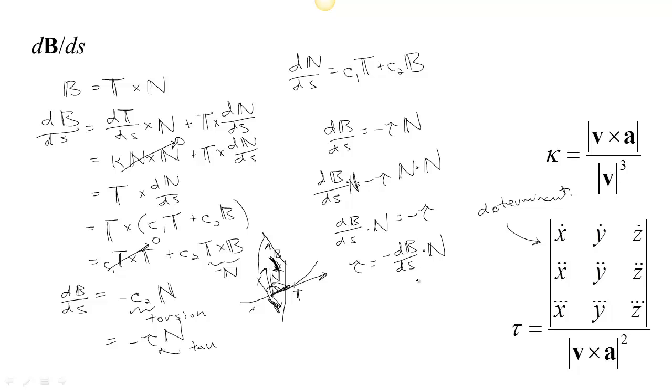Finding torsion this way can sometimes be difficult, because you have to find T, so you can find N. And then you have to find B by taking T cross N, and then you have to find the derivative of B with respect to s. Now finding the derivative of B with respect to s is not so bad, because you don't actually have to do the arc length parameterization.